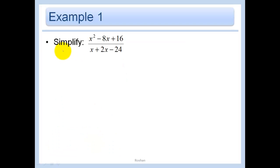Now I ask you to simplify. The only time we can cross things out is when we get it into a totally multiplication problem. So our goal is always going to be: can we get this into a multiplication problem? Because if we can, we can go crossing things out. As long as there are plus and minus signs, we cannot cross anything out.